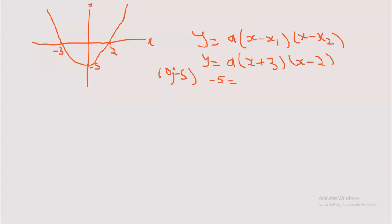I'm going to put y as minus 5 because the aim is to solve for a. So: minus 5 equals a times (0 + 3) times (0 minus 2). That gives us 3 times negative 2, which is minus 6. So we have minus 5 equals a times minus 6. Since our aim is to solve for a, I'll divide both sides by minus 6. Therefore a equals negative 5 over 6, which is the same as 5 over 6.